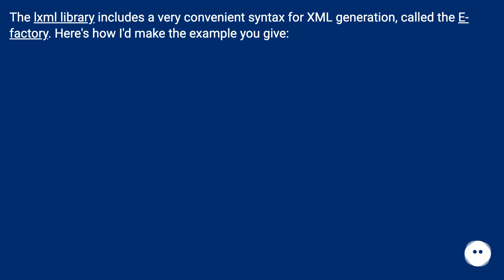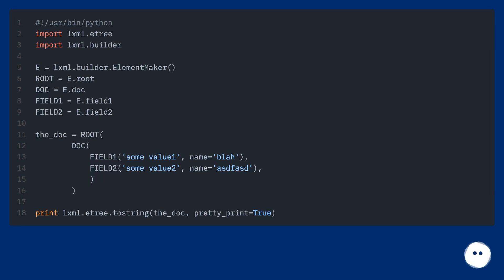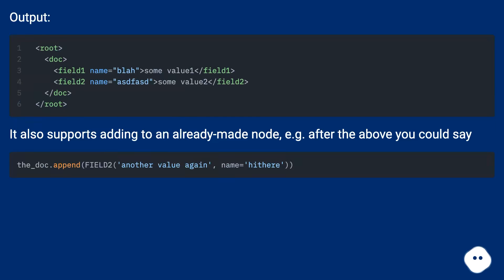The LXML library includes a very convenient syntax for XML generation called the E-Factory. Here's how I'd make the example you give. It also supports adding to an already made node — for example, after the above you could add additional elements.